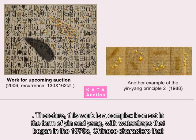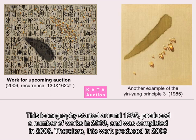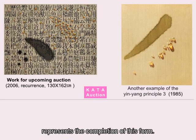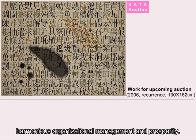Therefore, this work is a complex icon set in the form of yin and yang, with water drops that began in the 1970s and Chinese characters newly introduced after 1988. This iconography started around 1985, produced a number of works in 2003, and was completed in 2006. This work produced in 2006 represents the completion of this form. The harmonious principle of yin and yang contained in the work can be reinterpreted in a modern sense, such as family peace and happiness, harmonious organisational management and prosperity.